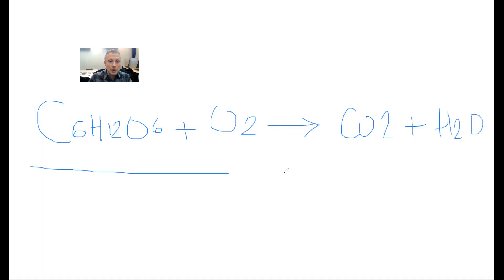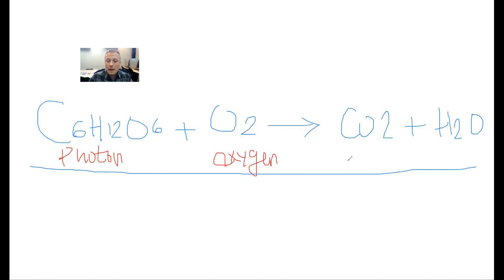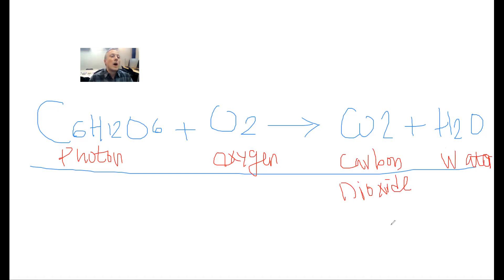The photosynthesis reaction gives us CO2 plus H2O. This reaction is a must — we need to know it for our GED science test. So this is our photon, our energy molecule. This is your oxygen. And then we have our carbon dioxide — that's why it's CO2 — and then we have our water.